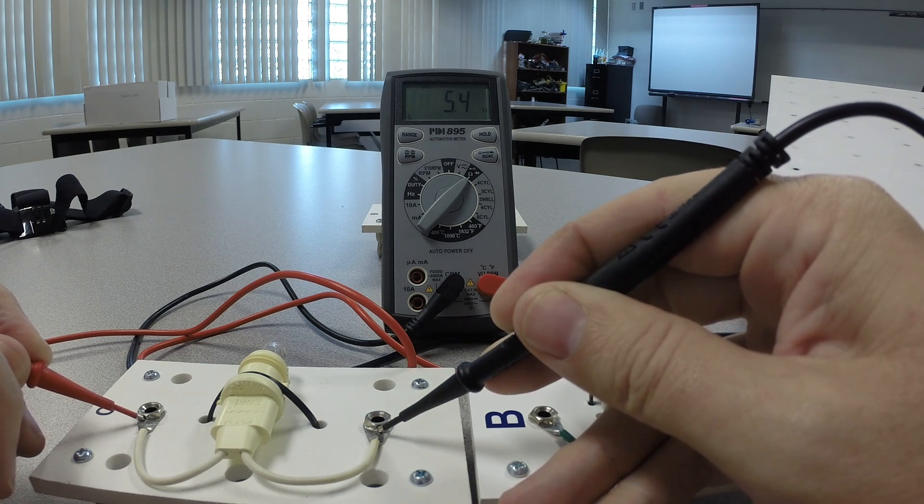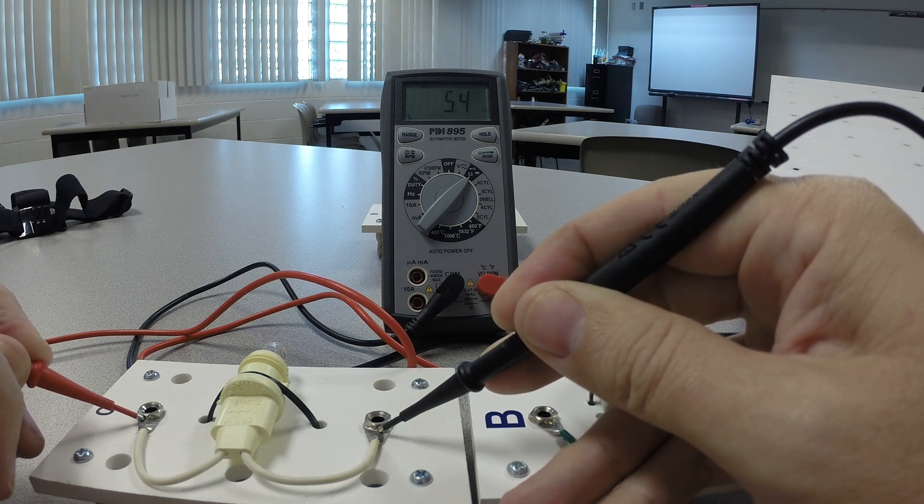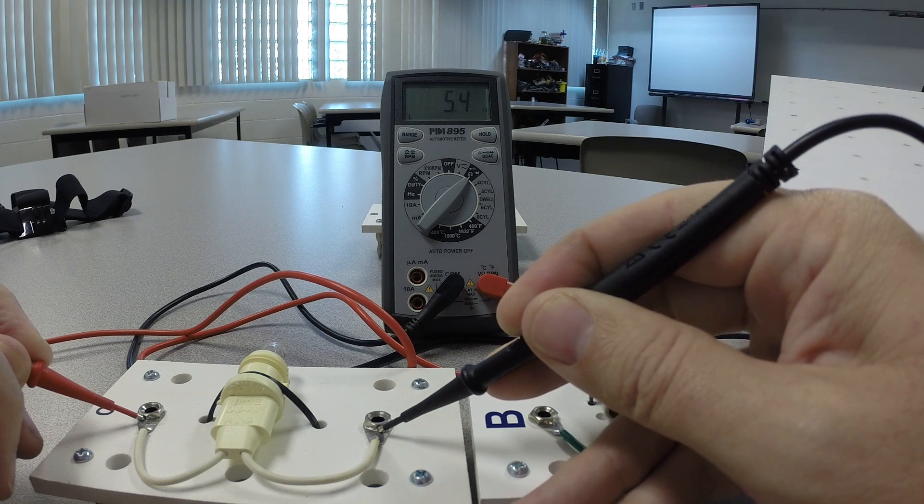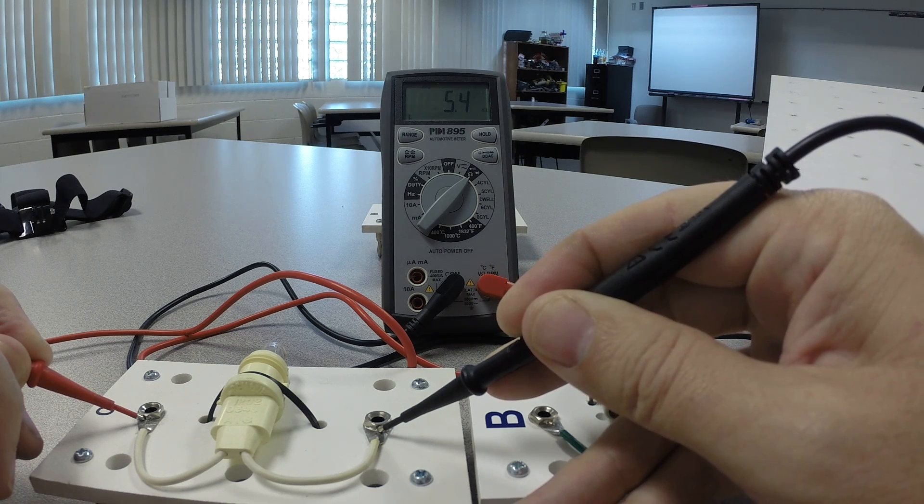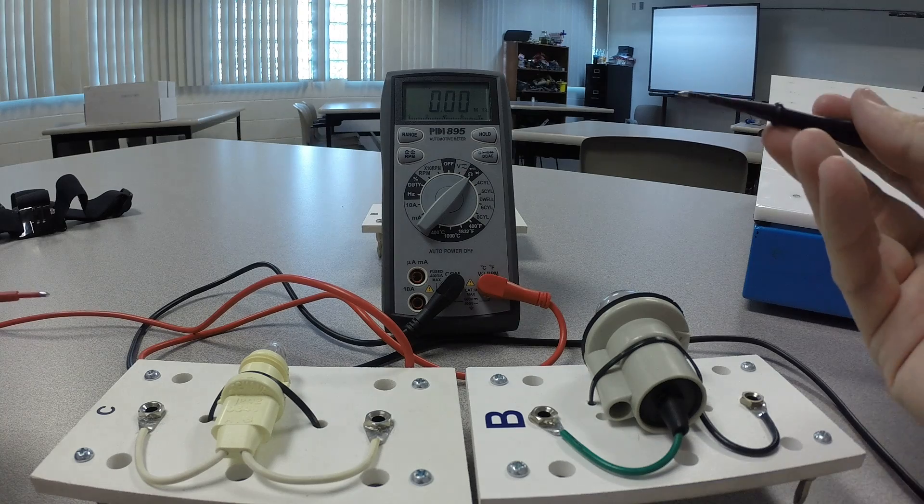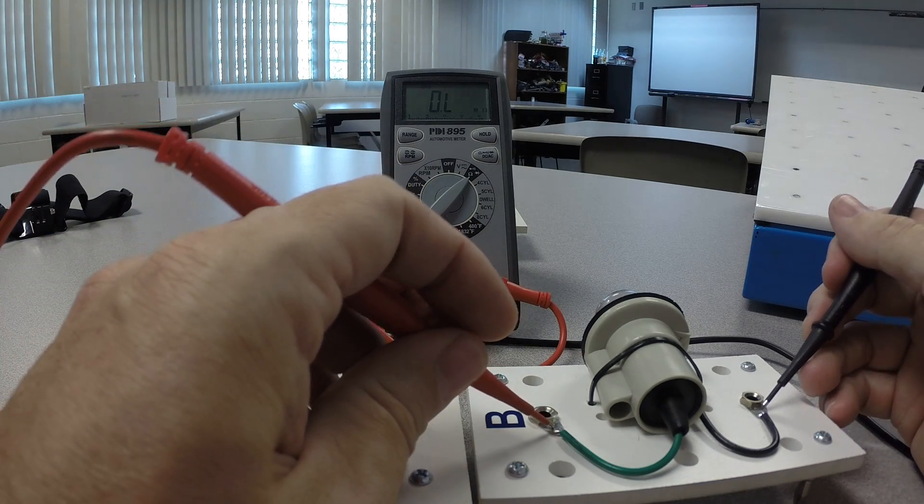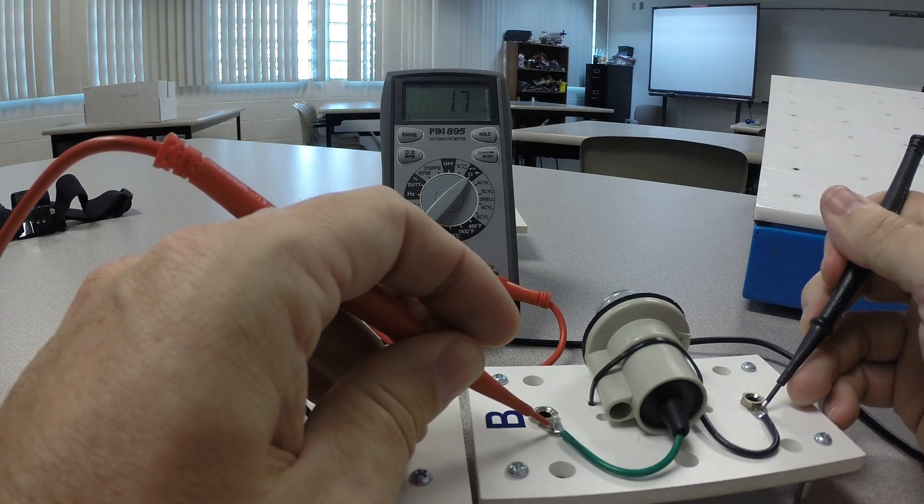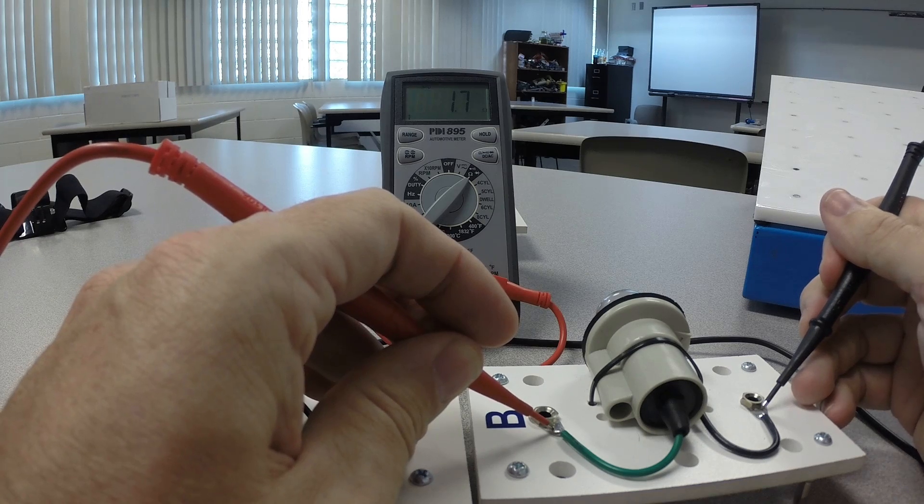Now we would want to, if we were really concerned about the resistance of this component, we'd want to check our specifications to see if 5.4 falls in specifications. And since this is just a bulb, yeah, that's fine. And of course on the big one having 1.7, is that good? Yeah, that's good.